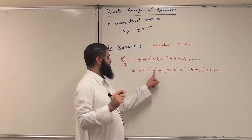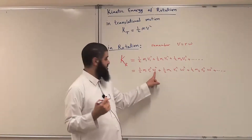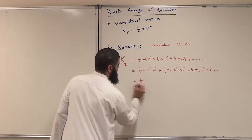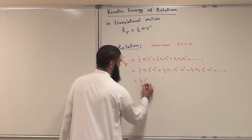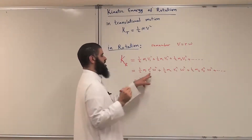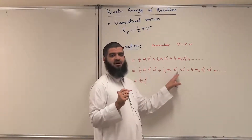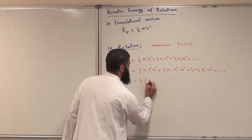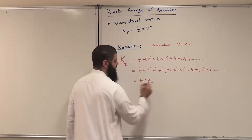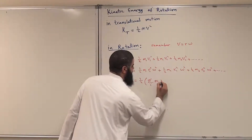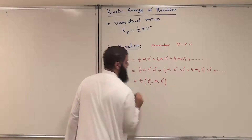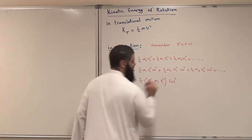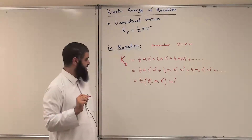As you can see, omega can be taken out as a common factor. And one-half is also a common factor. So I can write this as: one-half multiplied by the sum — m1 r1 squared plus m2 r2 squared plus m3 r3 squared — which I can write as sigma over i of mᵢ rᵢ squared, all multiplied by omega squared. I hope this is clear.